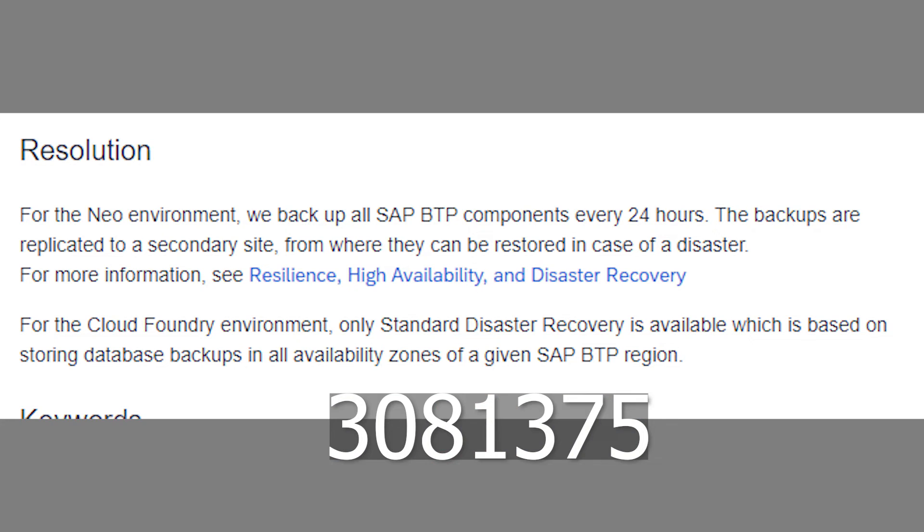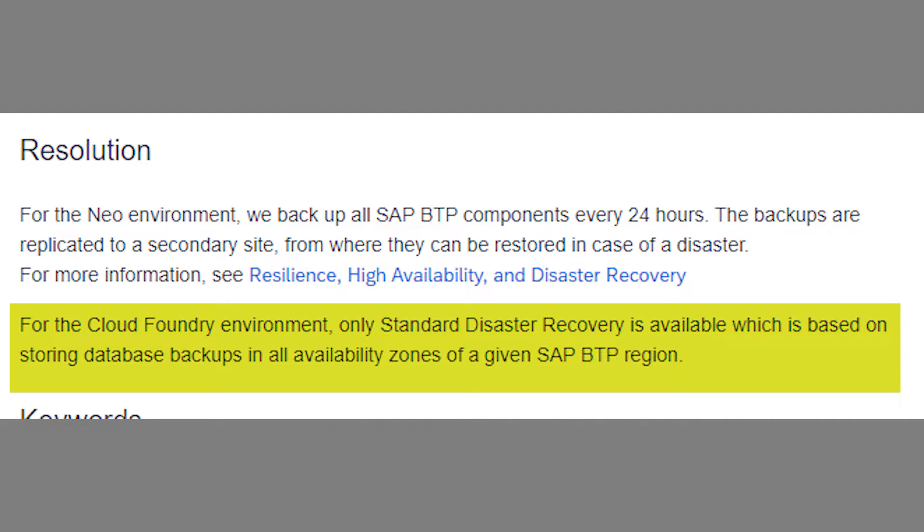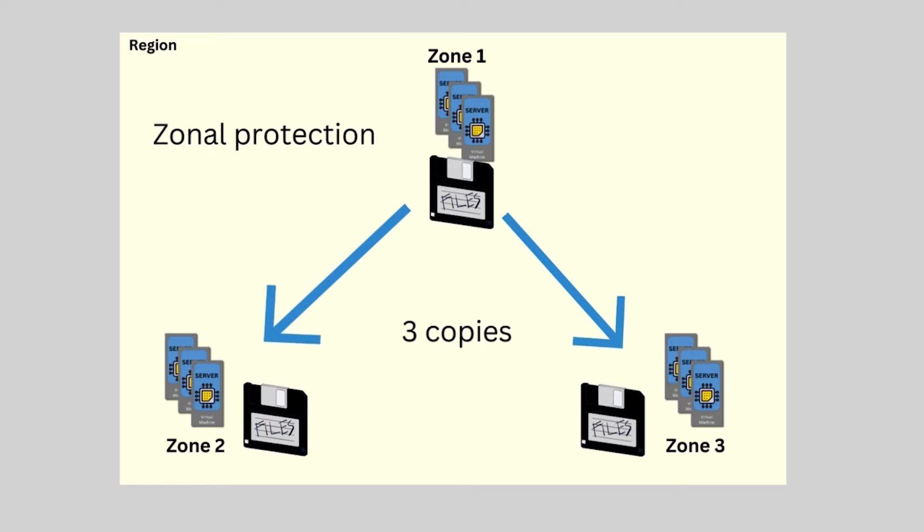The BTP platform itself is backed up by SAP — you cannot control or configure this. With certain disaster recovery technologies, it is possible to have replication as a protection measure, meaning replicating data from one location to another. We know that backups are used for disaster recovery of SAP BTP because of what is written in SAP Note 3081375. For the Cloud Foundry environment, only standard disaster recovery is available, which is based on storing database backups in all availability zones of a given SAP BTP region. The word 'standard' implies there is another level above it, but in this case there isn't. The line is saying that backups are replicated between zones within a single region.